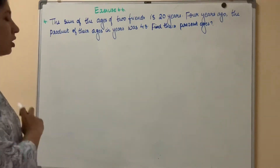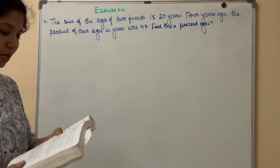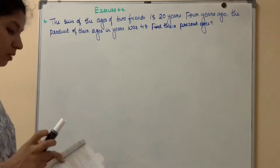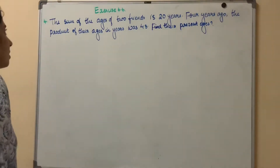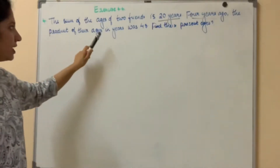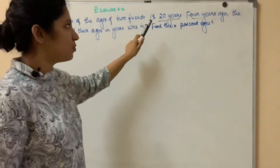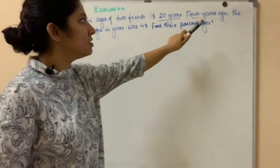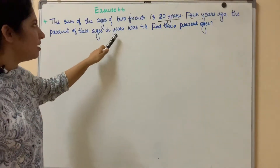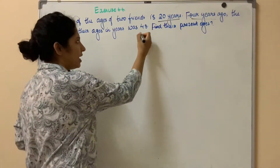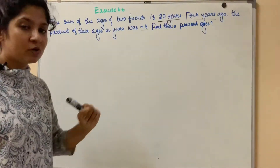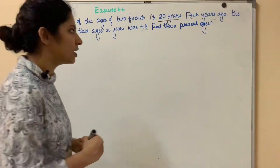Exercise 4.4, Question No. 4: Is the following situation possible? If so, determine the present ages. The situation: The sum of the ages of 2 friends is 20 years. Four years ago, the product of their ages in years was 48. Find the present ages. For this type of question, let's follow the steps.